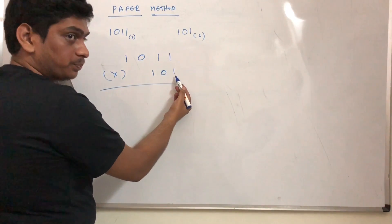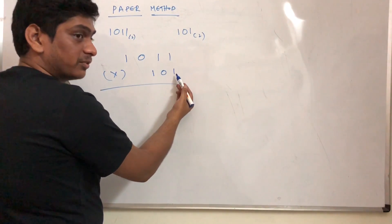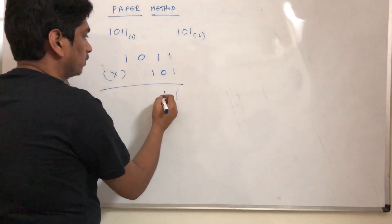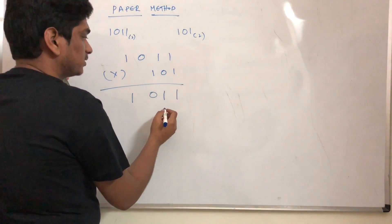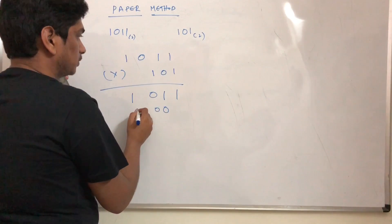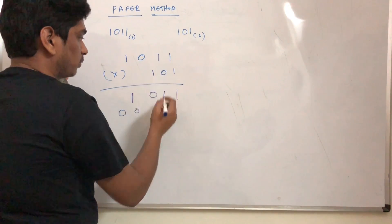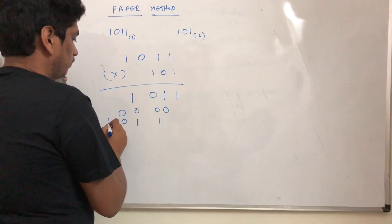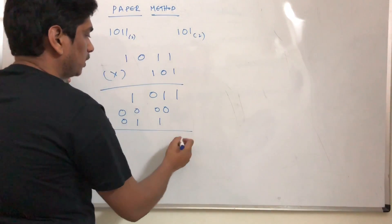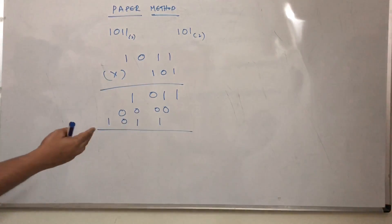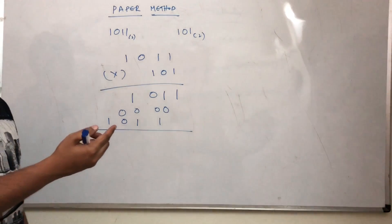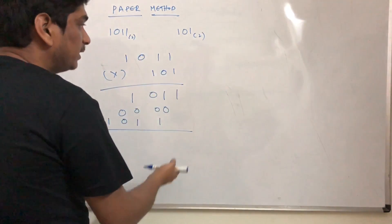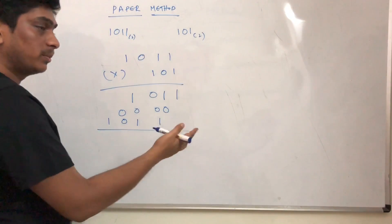The least significant bit is 1, so we get 1, 1, 0, 1. The next bit is 0, so we get 0, 0, 0, 0, 0. And the next is 1 again, so we get 1, 1, 0, 1. This is exactly how you do your multiplication on paper for any number, and this is exactly how you do it for binary numbers.